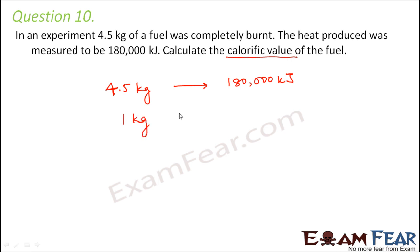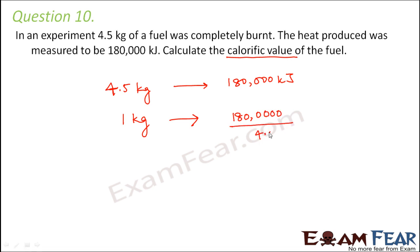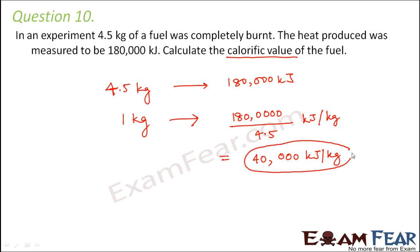So when 1 kg of fuel is completely burned, the energy produced is 180,000 divided by 4.5 kilojoules per kg, which equals 40,000 kilojoules per kg. Therefore, the calorific value of the fuel is 40,000 kilojoules per kg.